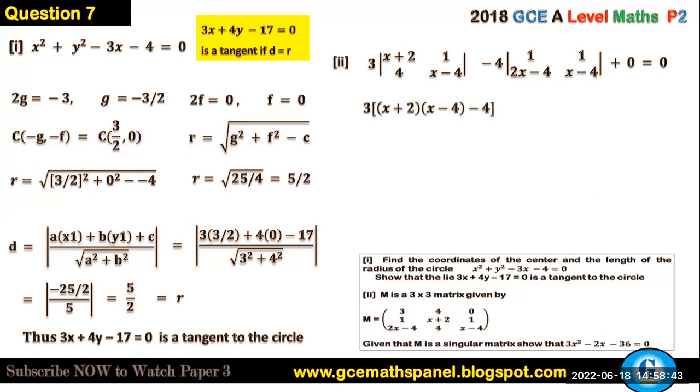This will give us 3 into (x plus 2)(x minus 4) minus 4, minus 4 into (x minus 4) minus 2(x minus 4) equals zero. So this will give us 3 into x squared minus 2x minus 12.